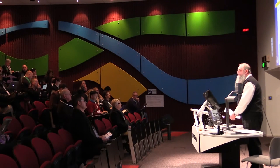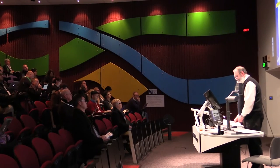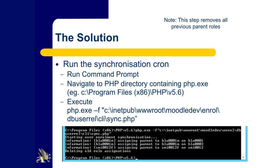Then comes perhaps the trickiest part: you need access to the command prompt. If your Moodle site is hosted externally you may need to contact your host. We host internally so it's easy. Navigate to the PHP directory containing php.exe and execute the command: php.exe -f followed by the path to the plugin you've just installed. If it works — which it has for us every time — you'll see all the links being made between parent and child.